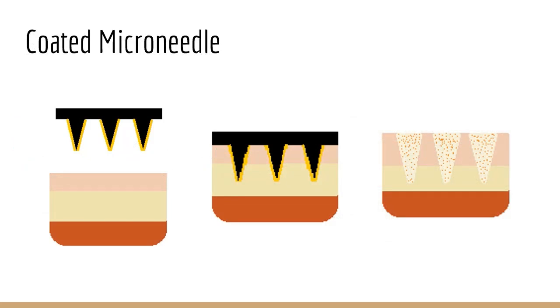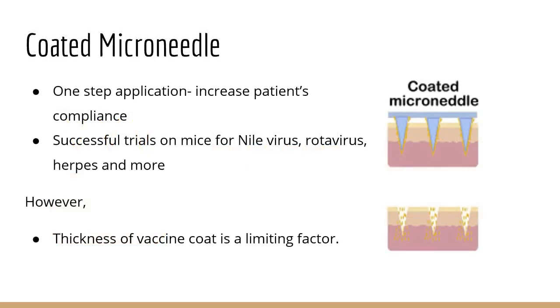Coated microneedles incorporate the needle and the vaccine patch together by coating the needle with the vaccine. The microneedle patch is applied to the skin and the vaccine will be delivered simultaneously to the intradermal space directly. Coated microneedles are advantageous as it only requires a single patch application which would likely increase patient compliance. The disadvantage to coated microneedles is the limitation on the thickness of the vaccine coat. If the vaccine coat is too thick, it may lead to decreased delivery efficiency due to decreased sharpness. This then limits the quantity of vaccine administered, hence the type of vaccine applicable to this method.